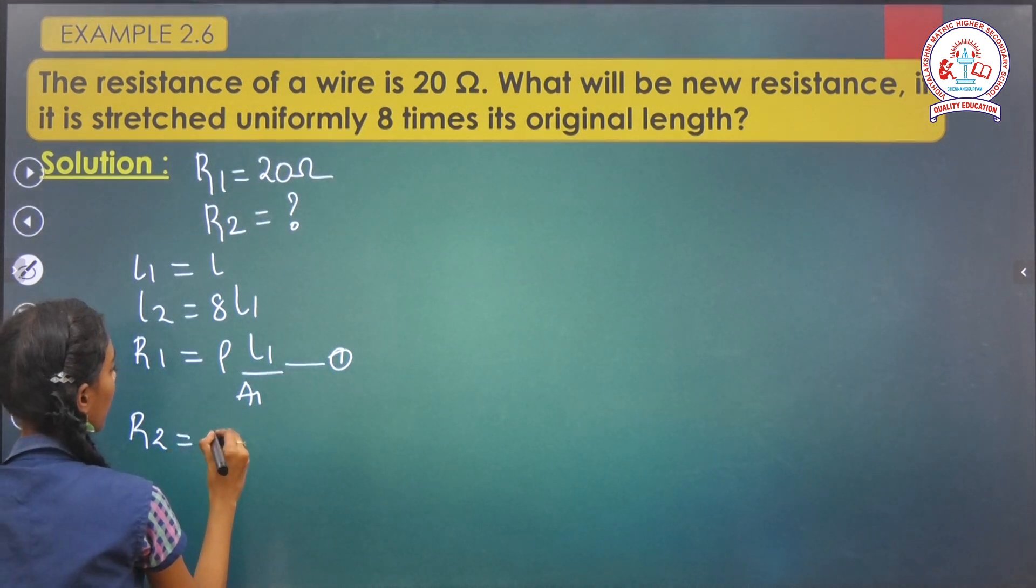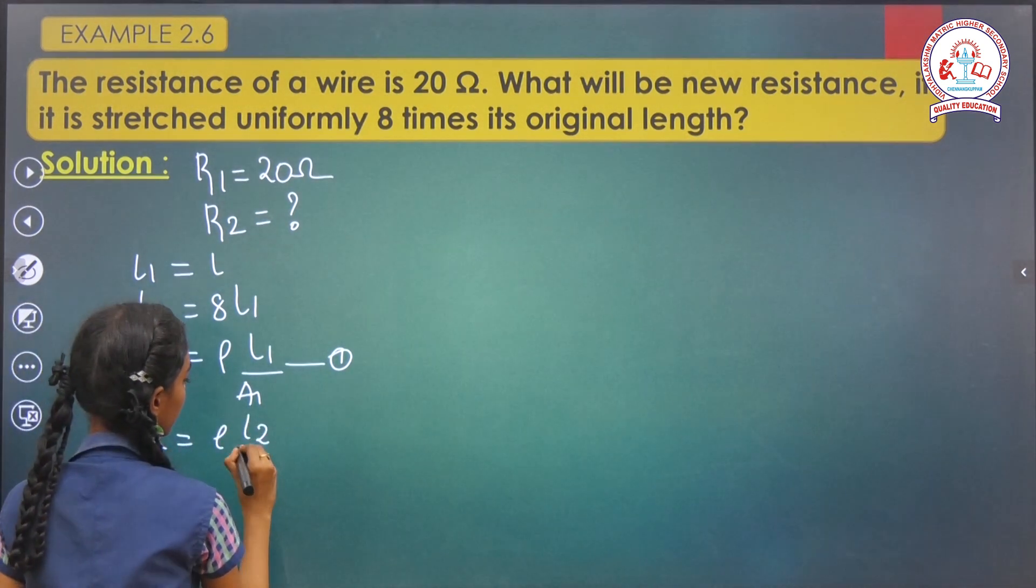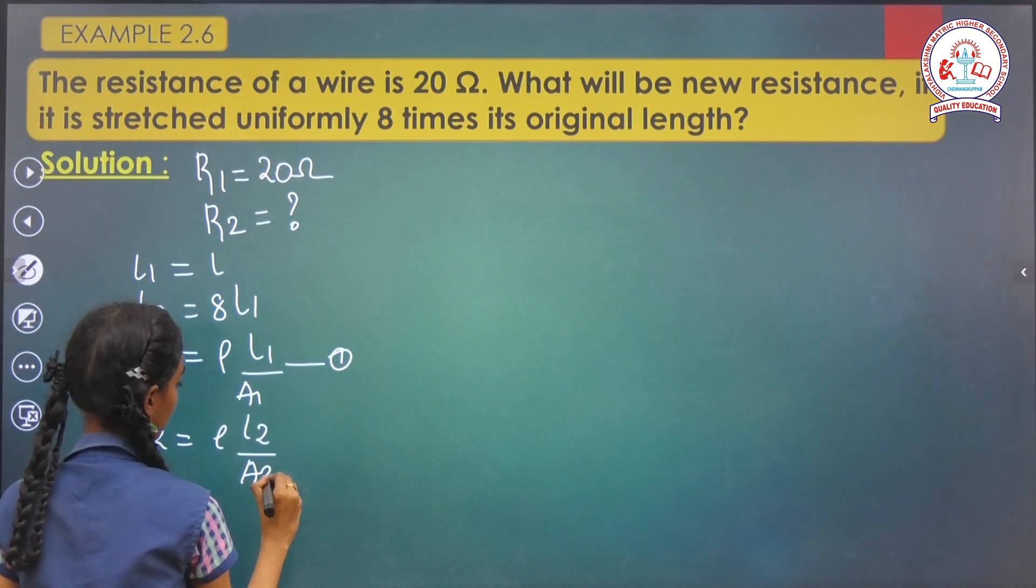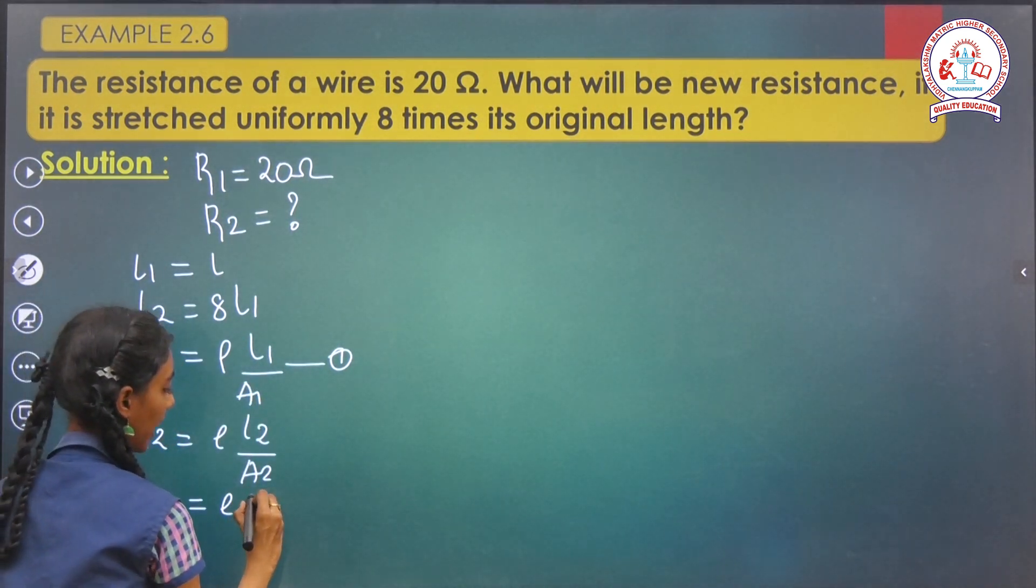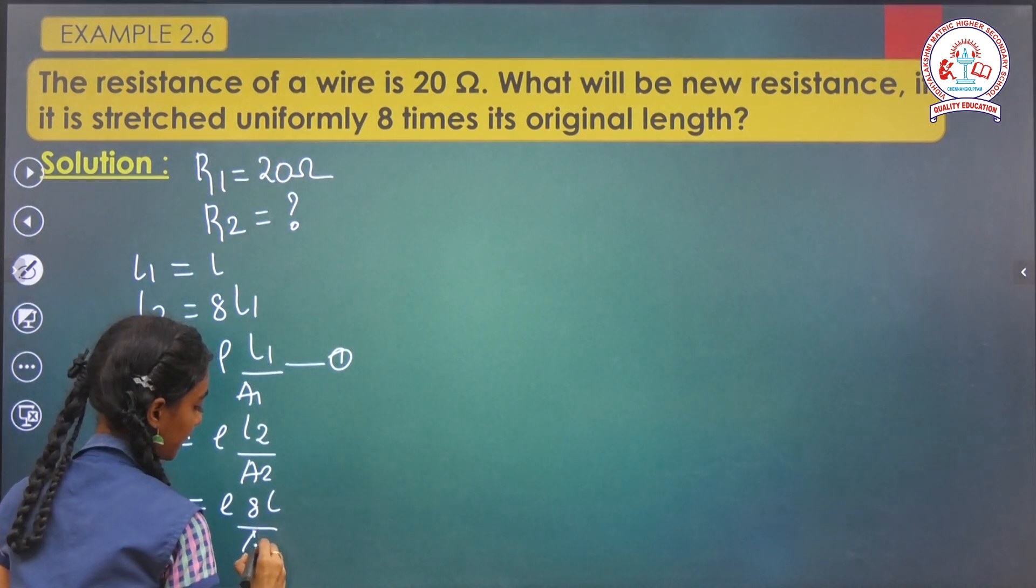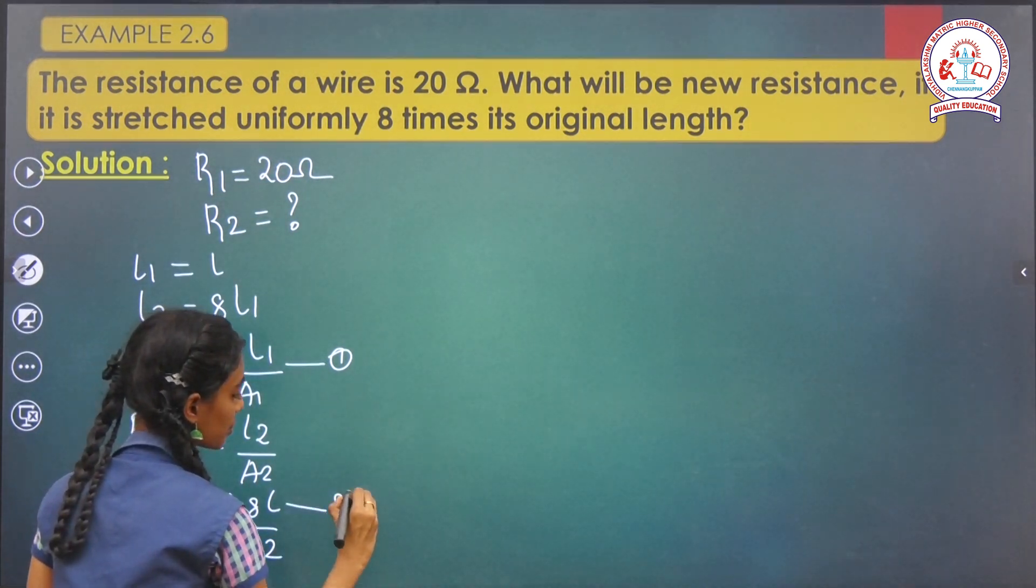R2 equals ρL2 by A2. ρL2, we already know that L2 equals 8L by A2. This is equation number 2.